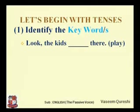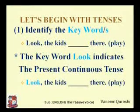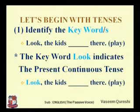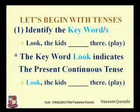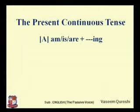Here there is an example: 'Look, the kids ___ there.' The verb 'play' is given in brackets. You have to identify which word tells us the name of the tense in the sentence. The keyword 'look' at the beginning is an imperative that indicates the present continuous tense. So 'look' becomes the keyword. The answer would be from present continuous tense, and when the sentence is in active voice, we have to use am, is, or are plus the -ing form.